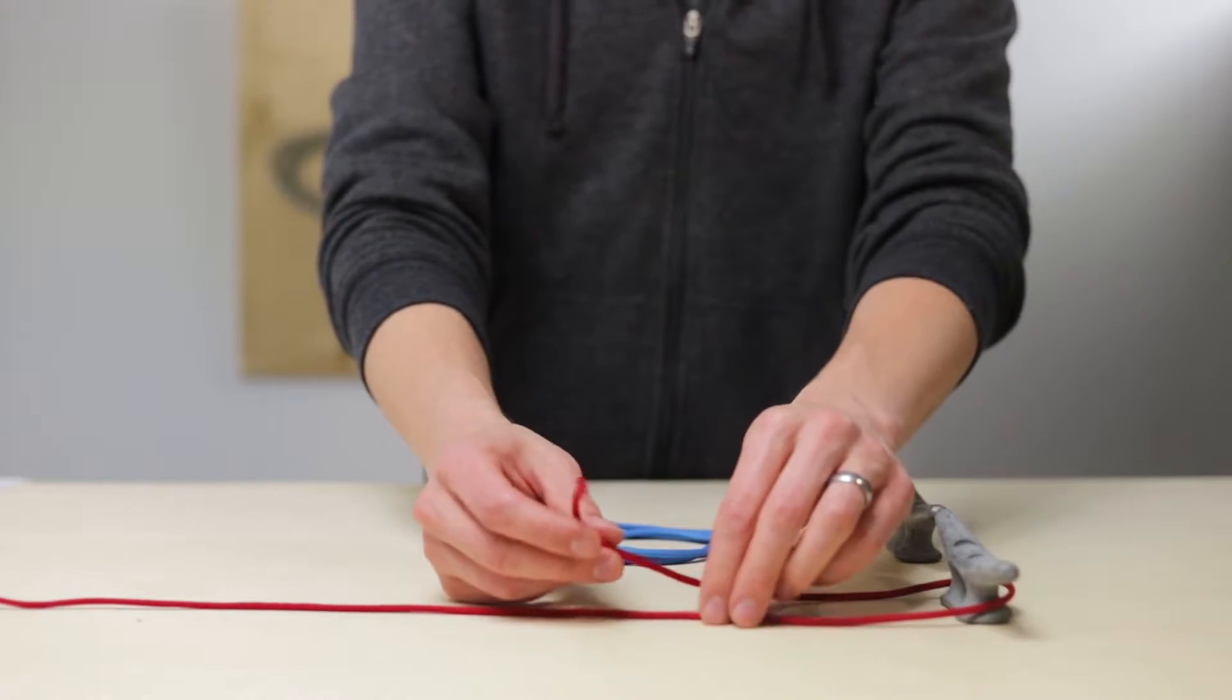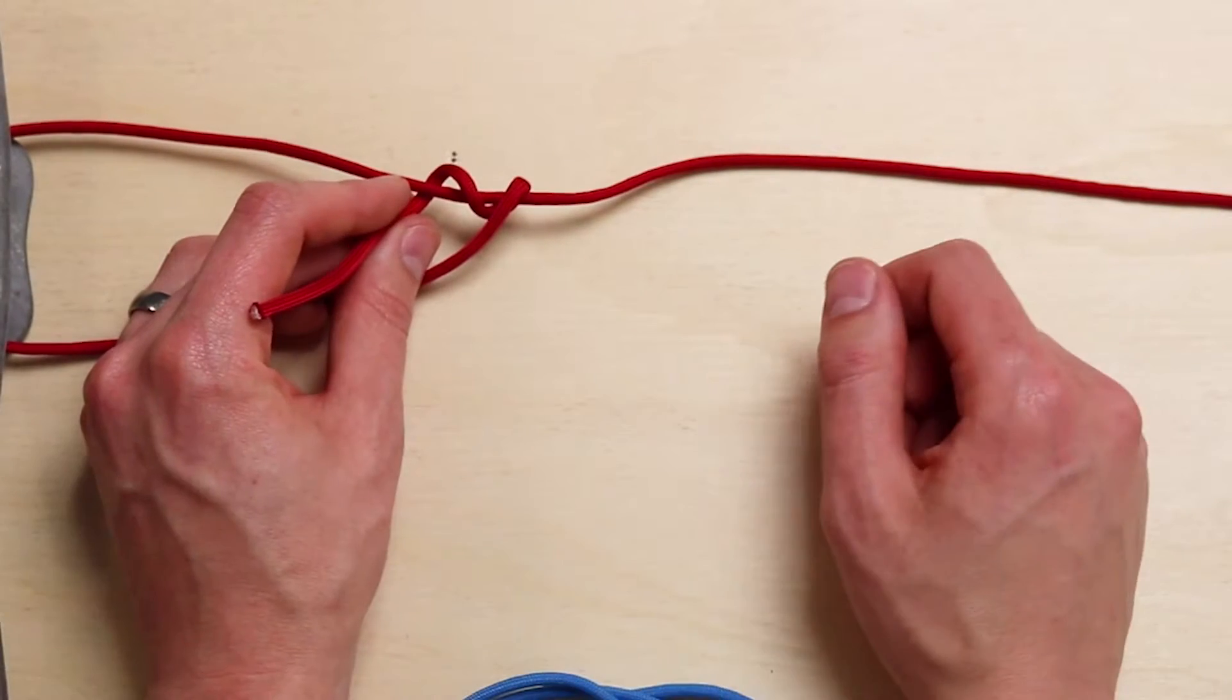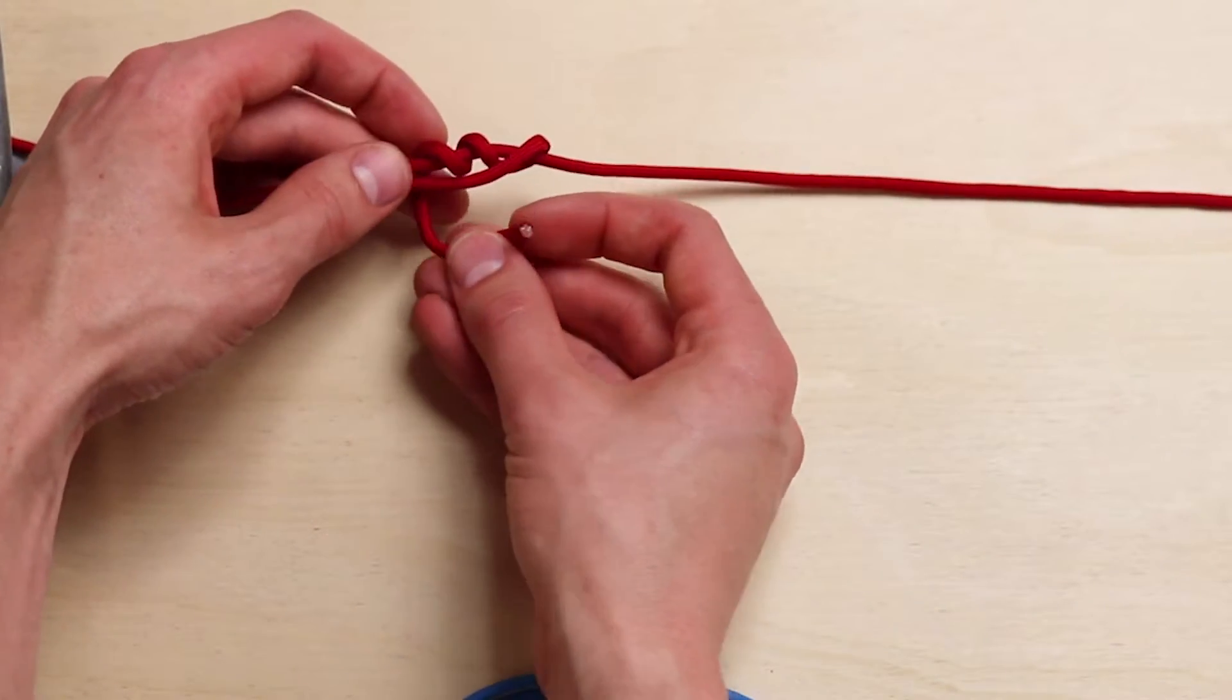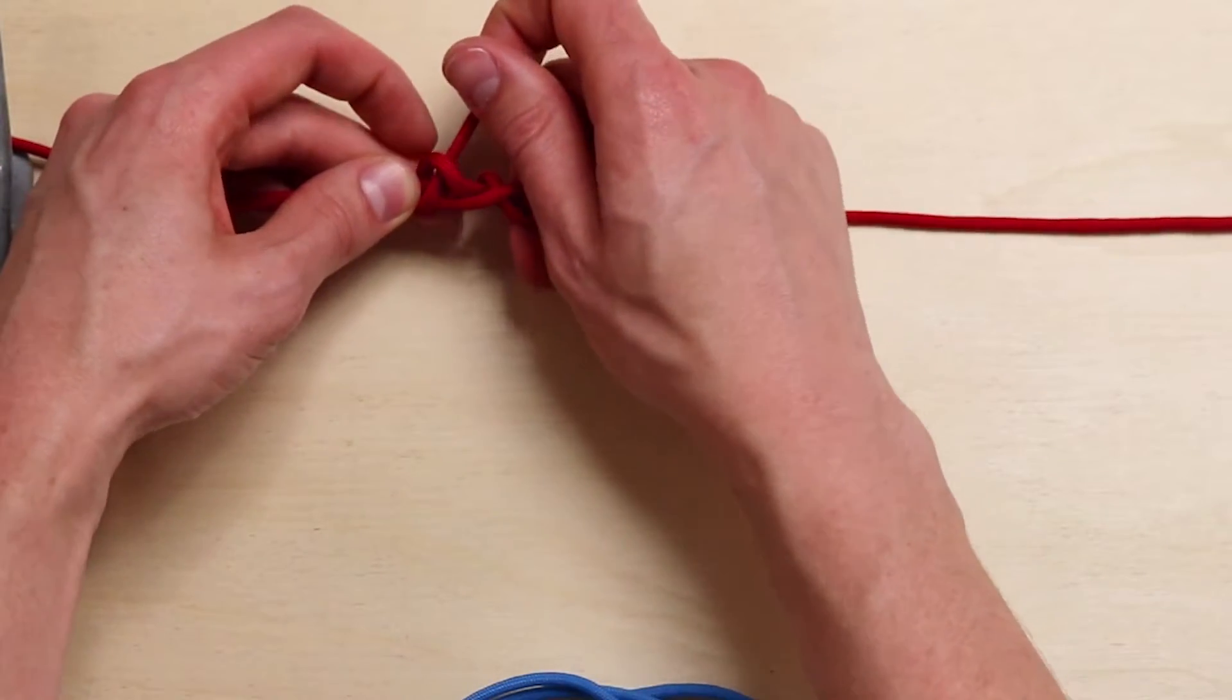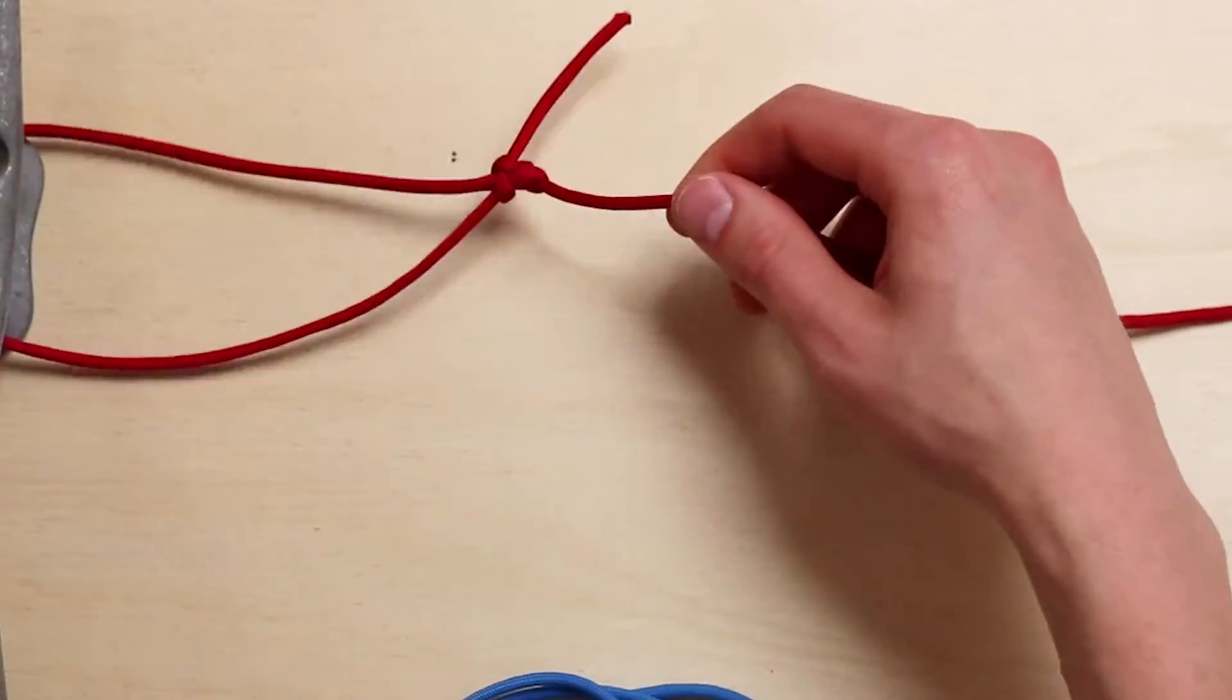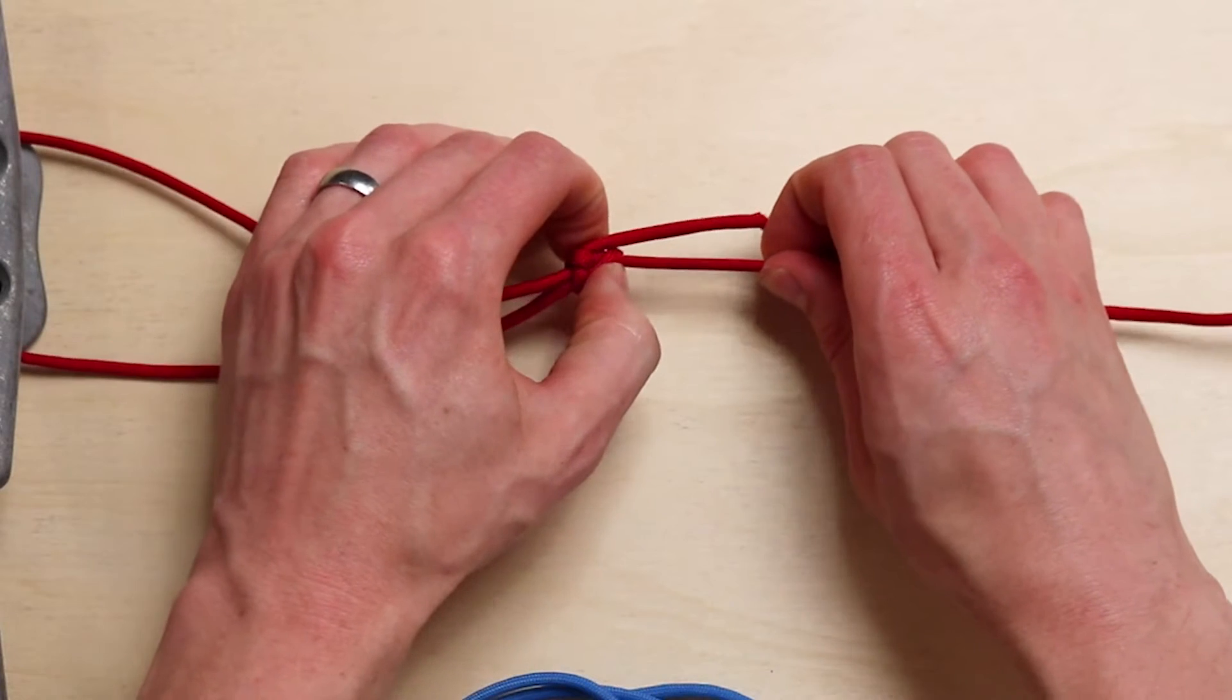Pass the working end around the standing end once and twice going back towards your object and then once around both cords like this and then you just tuck the end under that last pass. Hold that all tight and then when you put tension on this end of the line it holds but you can still adjust it freely up and down.